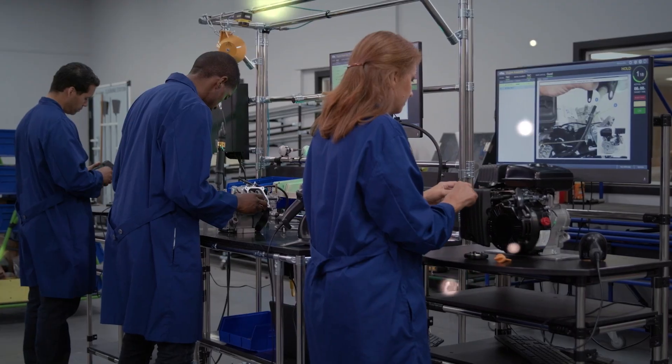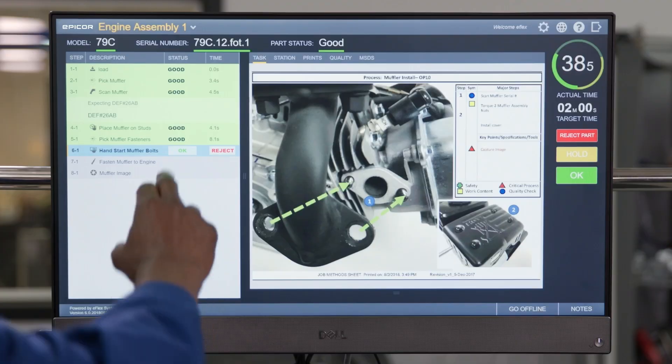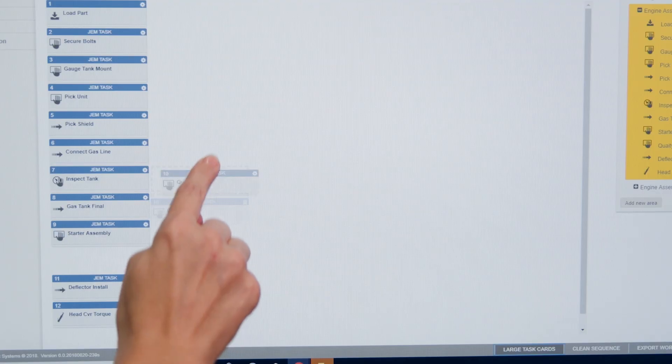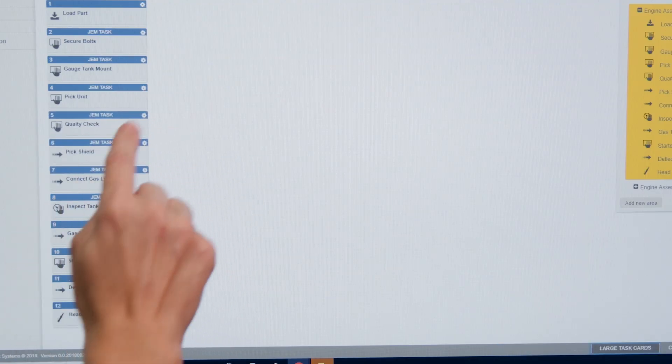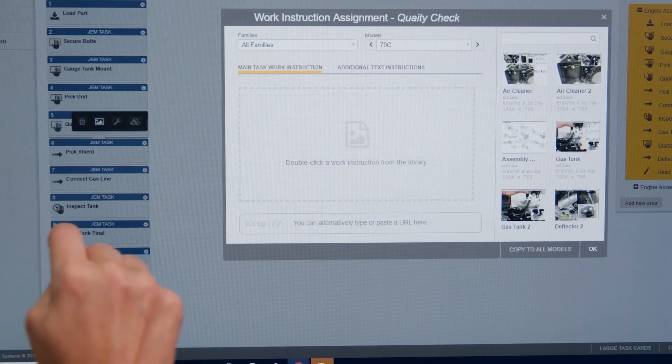Introducing Epicor Connected Process Control, a no-code, low-code MES system offering a new era of manufacturing software with flexible configurations and advanced controls to solve problems faster and meet evolving customer demands.